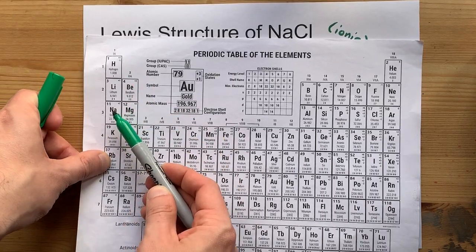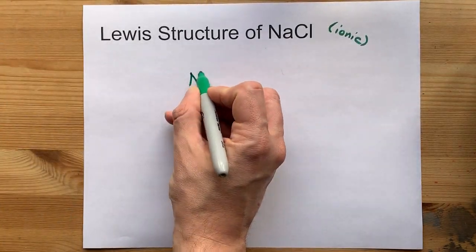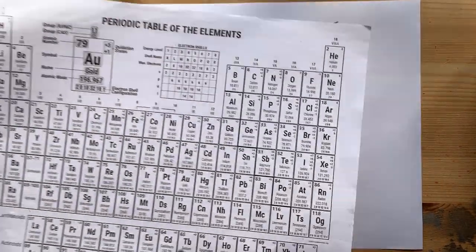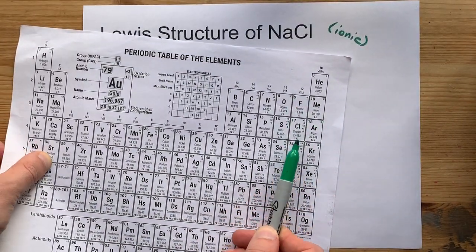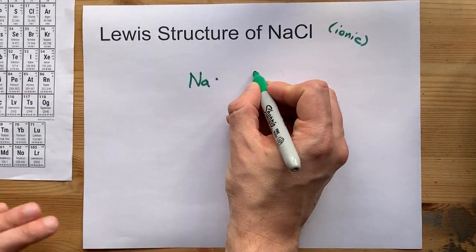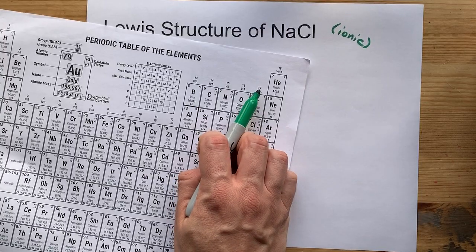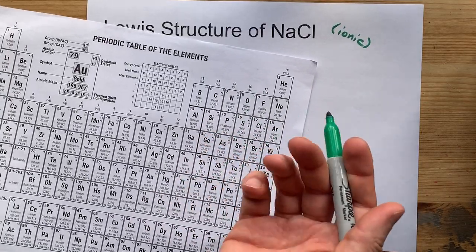Sodium is in group one. It brings one valence electron with it. Chlorine is in group 17, and so it brings seven valence electrons. I've just memorized that, but you can remember it because group 17 brings seven. Get it?